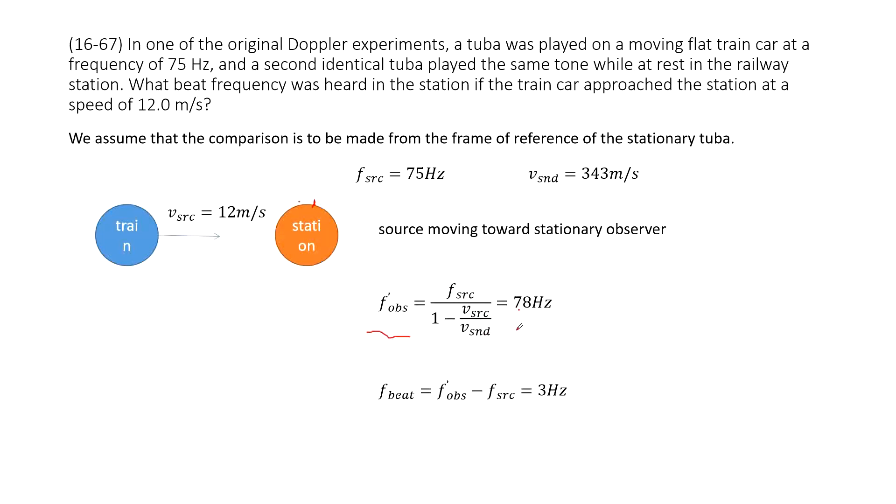The next one, we need to find the difference between this observed frequency from the train and the actual source, the actual frequency of the source. So we use F observed minus the F frequency source, get it at 3 hertz.